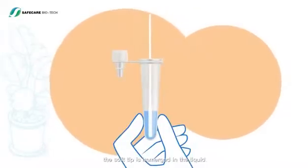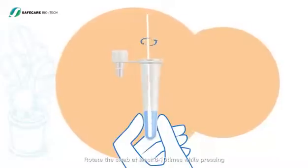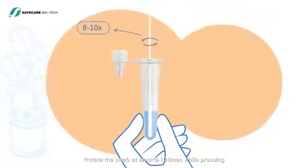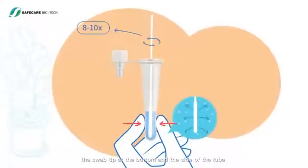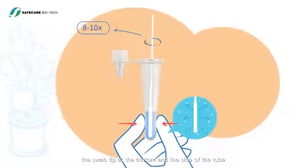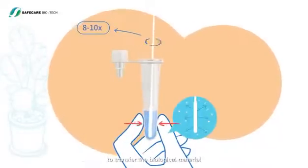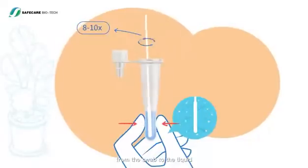Get ready to test. Insert the swab into the tube until the soft tip is immersed in the liquid. Rotate the swab at least eight to ten times while pressing the swab tip at the bottom and the sides of the tube, to transfer the biological material from the swab to the liquid.